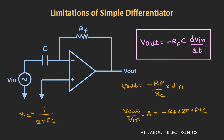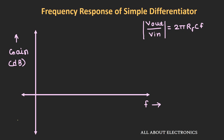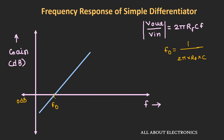As the frequency increases, the gain of this differentiator will also increase. At 0 Hz the gain is 0, and it rises with frequency. At one particular frequency, the gain equals 0 dB — this is called F0, given by 1/(2π × Rf × C). Beyond this 0 dB frequency, the gain continues to increase.